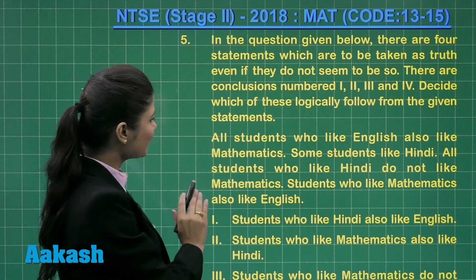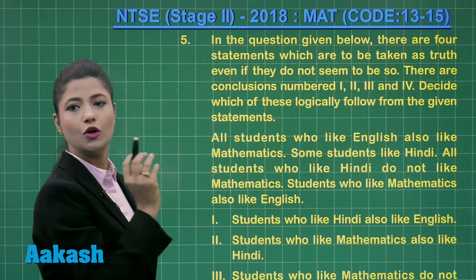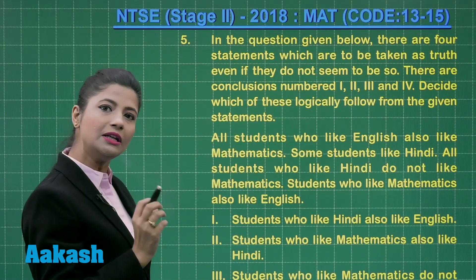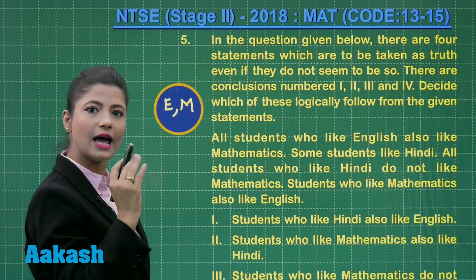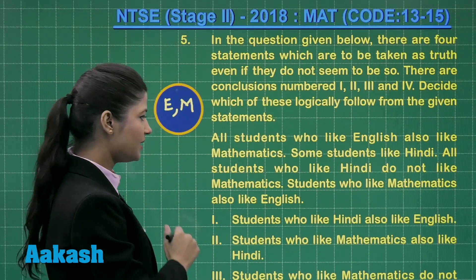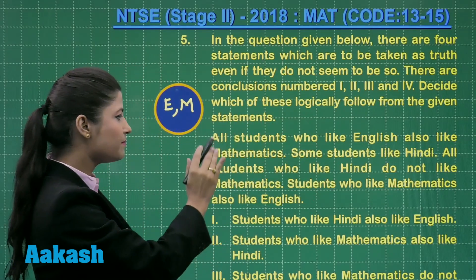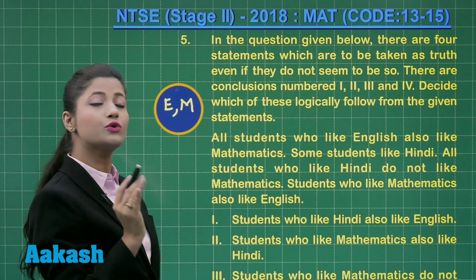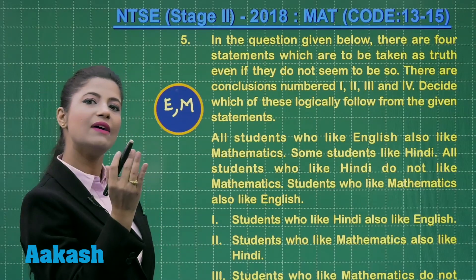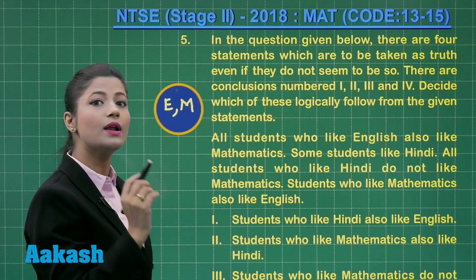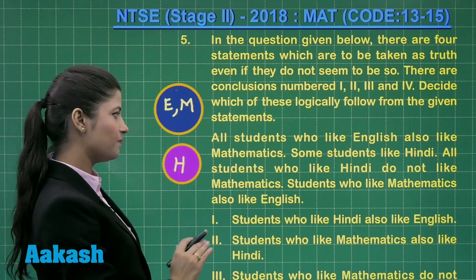Let us firstly read the statement: all students who like English also like mathematics. Diagrammatically you can represent that all students who like English also like mathematics. And then it states: all students who like Hindi do not like mathematics. So those students who like Hindi are not liking mathematics. We will have a different set of students who are liking Hindi, which we can diagrammatically represent in this form.